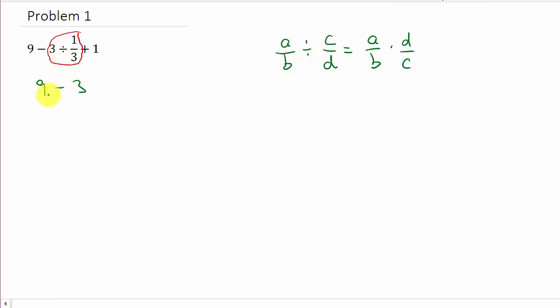So that's going to be 9 minus 3 divided by 1 third. But if we change that to multiplication, we have to take the reciprocal of 1 third, which is 3 over 1, or just 3. And then we have the plus 1.